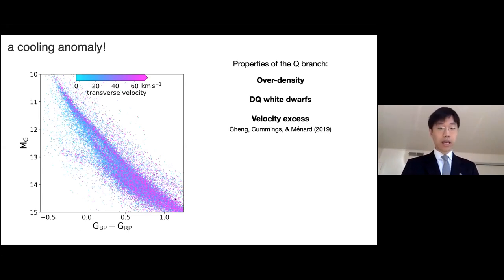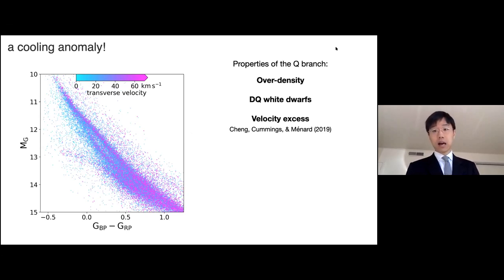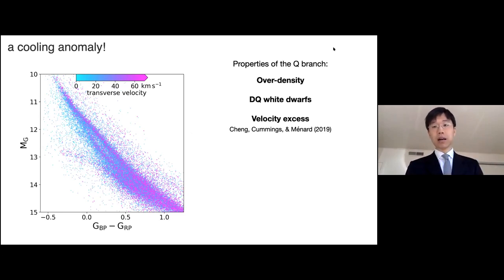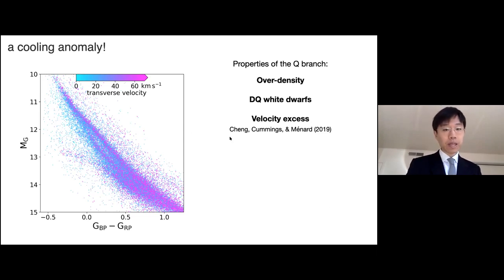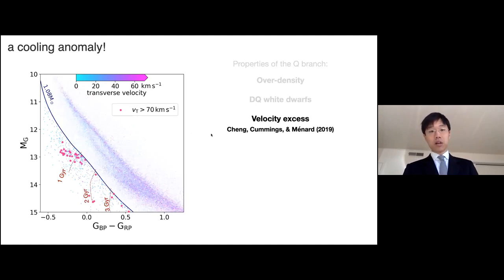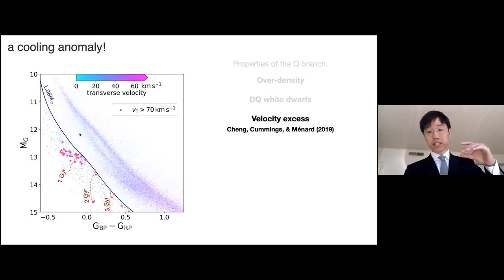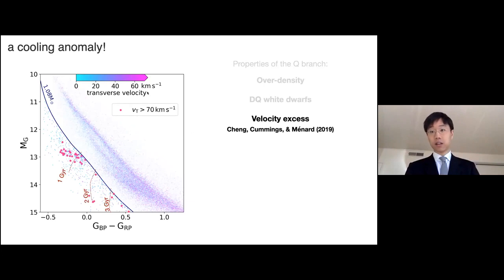Here I'm showing the HR diagram again, color coded by the transverse velocity measured from the proper motion and the parallax of white dwarfs. If we focus on the high-mass part, we see some concentration — highlighting the white dwarfs with transverse velocity higher than 70 kilometers per second — and they are also concentrated on the branch.